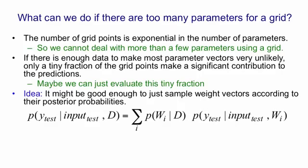times the probability distribution for the test values that we predict given that point in weight space WI and given the test input.